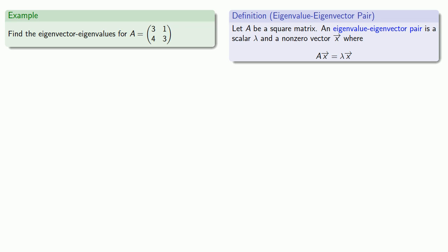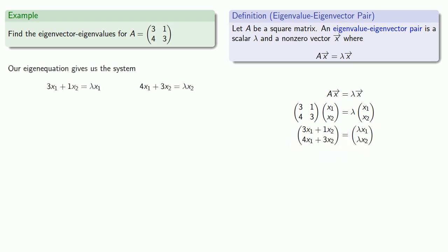So by assumption, ax equals lambda x. Well, I know what A is. I don't know what the vector x is, so I'll let those be our unknowns. I'll do a little linear algebra. And our eigenequation gives us the system of linear equations. And we'll rewrite our equations in standard form and get all the unknowns over onto one side and all of our constants onto the other.